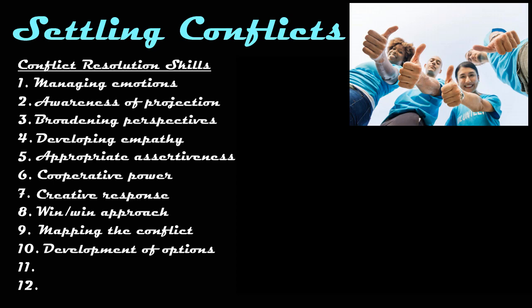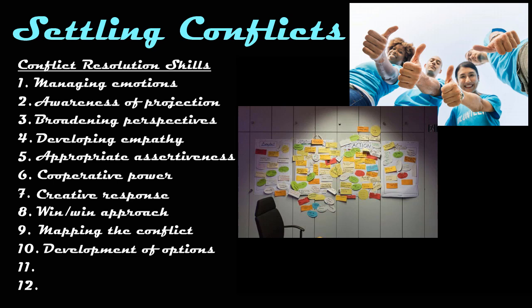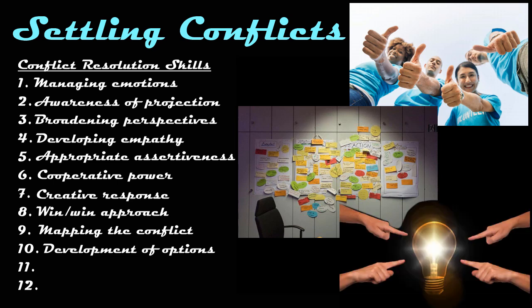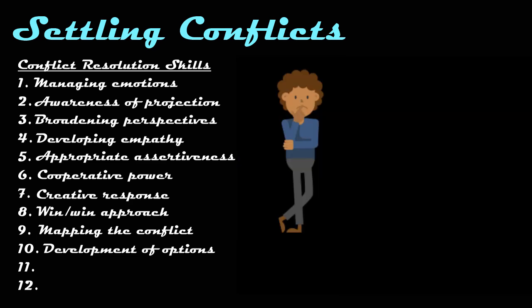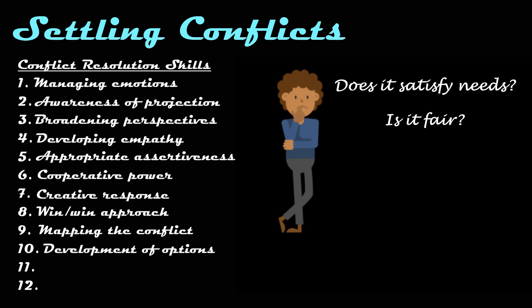Stakeholders may begin by identifying obvious solutions to which all parties can agree. Then, a brainstorming session allows those involved to voice all potential solutions that come to mind without censoring, justifying, or debating. Reaching a consensus might involve finding a completely new way of addressing the problem, or maintaining current arrangements but with certain concessions or trade-offs. When selecting an option from amongst a number of possible solutions, consider whether the solution satisfies the needs of all stakeholders, whether the solution is fair, and whether it is feasible. It may be necessary to try one solution, and then another, to see what works and what does not.